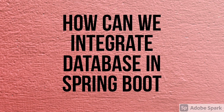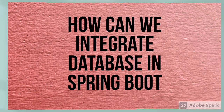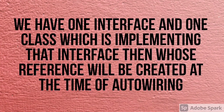The next question was: if we have one interface and one class implementing that interface, whose reference will be created at the time of auto-wiring? Our subscriber was also not sure of the answer, so just Google this question — it's a bit confusing. If you find the answer, please mention it in the comments.